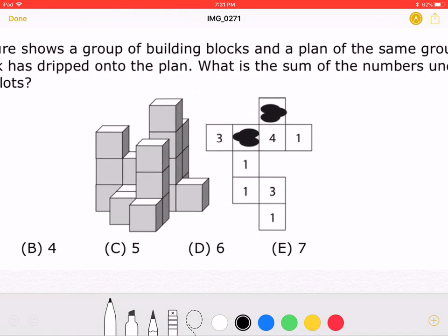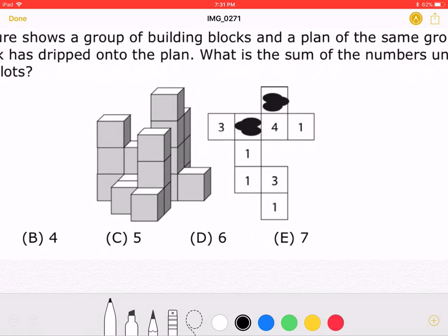Let's take a closer look at the drawings. We know that this column of 3 blocks must be this 3 over here. That means that this block where the ink dripped must be this over here.